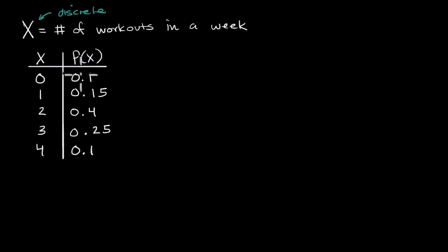And you can see that this is a valid probability distribution because the combined probability is one. 0.1 plus 0.15 plus 0.4 plus 0.25 plus 0.1 is one. And none of these are negative probabilities, which wouldn't have made sense.